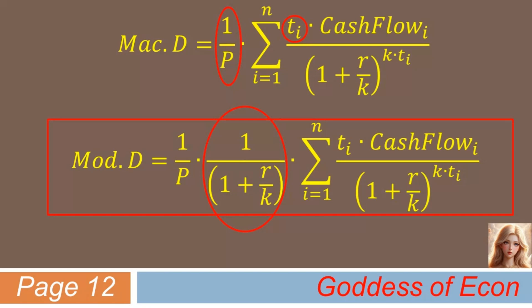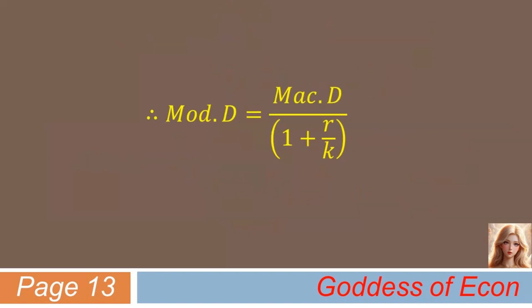Therefore, we can conclude that modified duration equals Macaulay duration divided by 1 plus r over k. This basically means that if you simply discount the Macaulay duration metric using the rate r over k, then you can get modified duration. And this is why modified duration comes out a little shorter than Macaulay duration in normal circumstances.